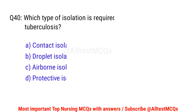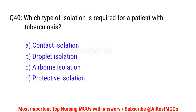Question number 40. Which type of isolation is required for a patient with tuberculosis? The right option is C: Airborne isolation.